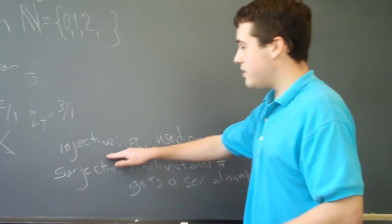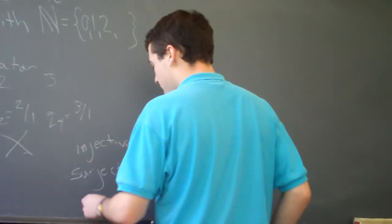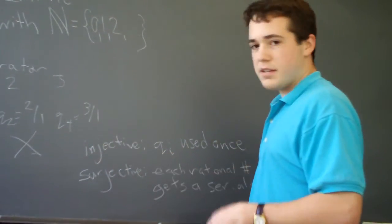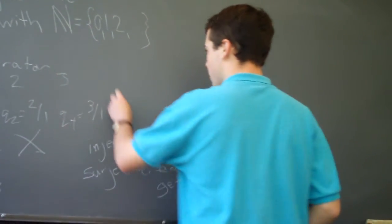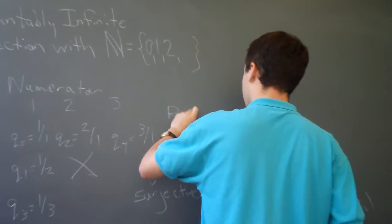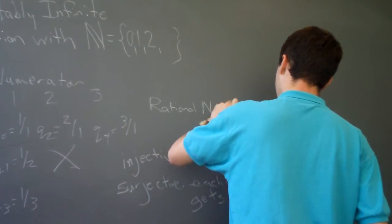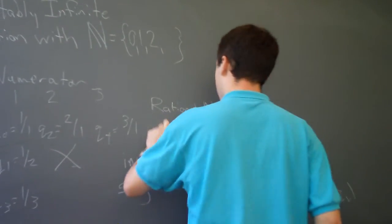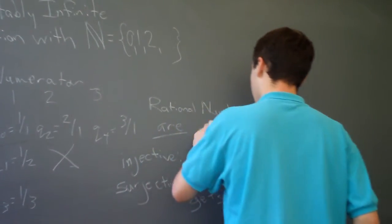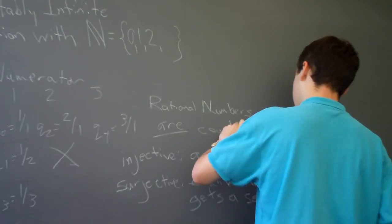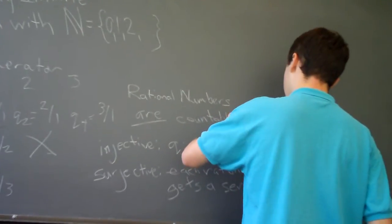Thus, because it is injective and surjective, the mapping here is bijective. So, the rational numbers are countably infinite.